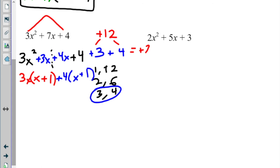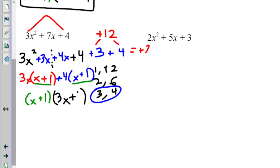Step four: I have my matching term — x plus 1 in both groups. It needs to be matching; if the terms in parentheses don't match, something went wrong. I take x plus 1 out of the whole thing. What's left in the red group is 3x, and what's left in the blue group is plus 4. Final answer: x plus 1 times 3x plus 4.